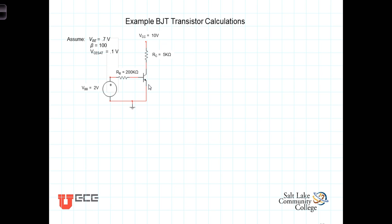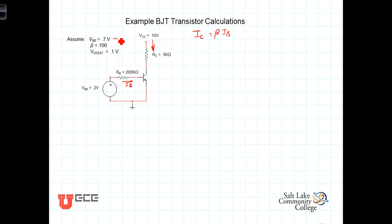The main result of that assumption is that I sub C, the collector current — which is the current flowing in this direction — is equal to beta times I sub B, where I sub B is the current flowing into the base. With that, and assuming that it's in the active region, we're also going to assume that V_BE is equal to 0.7 volts.